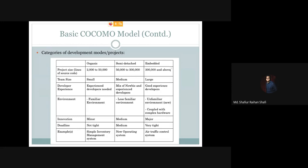Let's first discuss the organic mode. For an organic project, the size is 2 to 50 KLOC, meaning the value of KLOC ranges from 2 to 50.